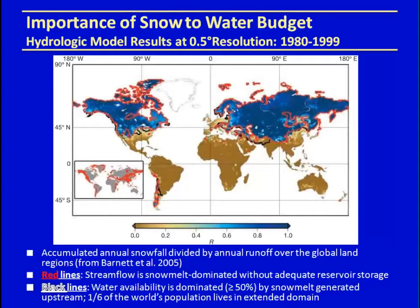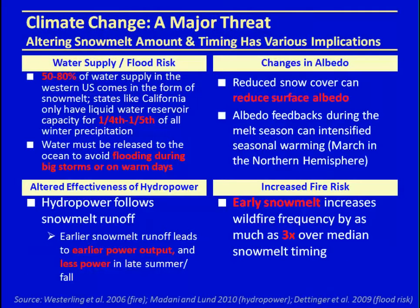This is also an issue in South America and New Zealand. Changes in climate will affect water supply and flood risks. Fifty to eighty percent of all water supply in the western U.S. comes in the form of snowmelt. States like California only have liquid reservoir capacity for one-fourth to one-fifth of total winter precipitation. If snow falls as rain instead, you can't capture all of it in reservoirs. Water must then be released to the ocean to avoid flooding, and you can really affect water supply in the summertime if you lose this natural snow reservoir.